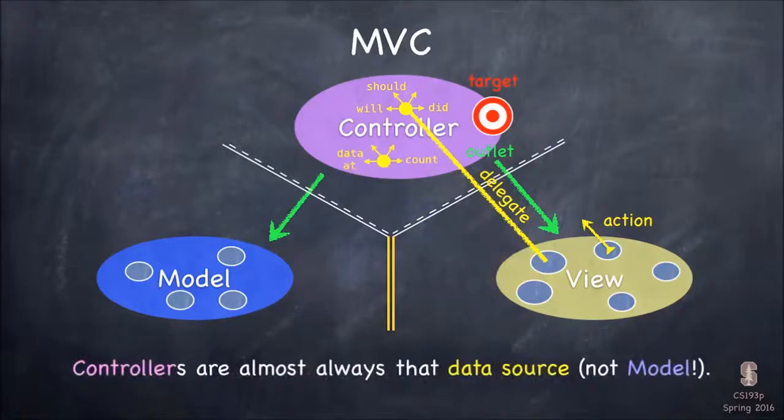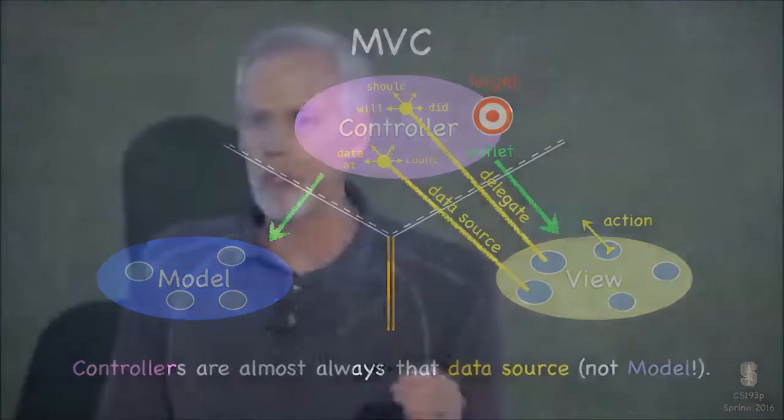But instead of will, did, and should, you've got messages in that protocol like, give me the data at this location. And how many pieces of data are there? Things that are asking about the data. So the view can figure out what's going on, and display it. And that's also done with delegation, although we call that delegate the data source. So there'll be another property on some views called the data source, which is this protocol-based pointer, basically, to another object. And the controller sets itself as that so that it can get involved in providing the data for the view.